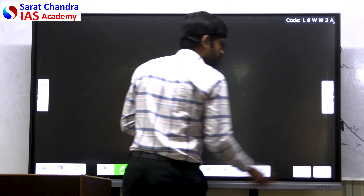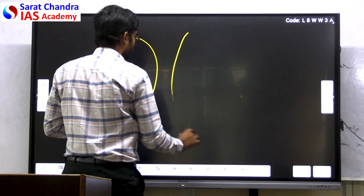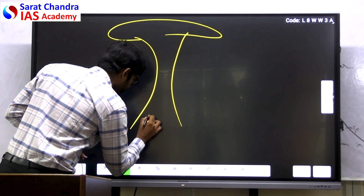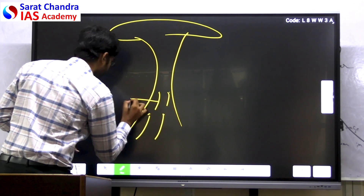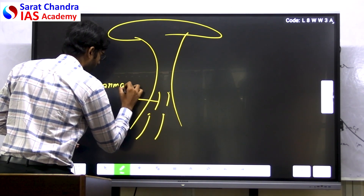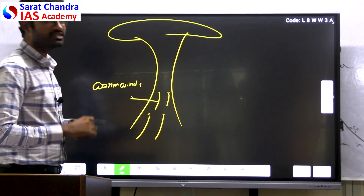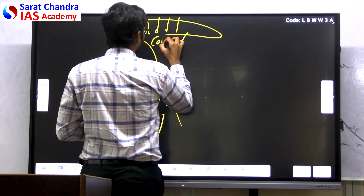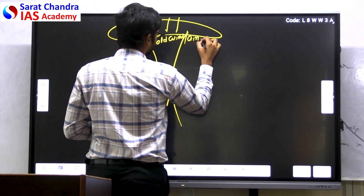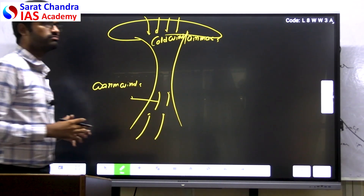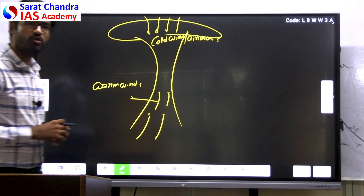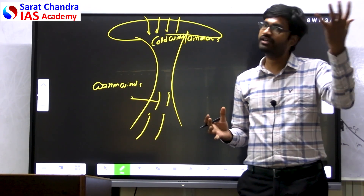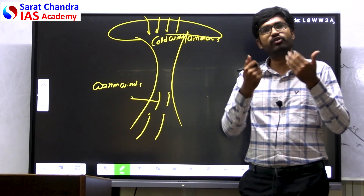How does a twister actually form? When you consider a large cloud that has been formed, there are stronger warm winds fueling this cloud. There is also a sudden occurrence of a cold air mass which tries to come down while the warm air mass tries to move up. When they meet, this warm moist air mass meets the cold dry air mass, and that can lead to the formation of tornadoes.